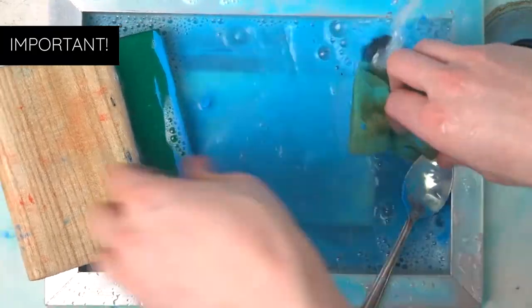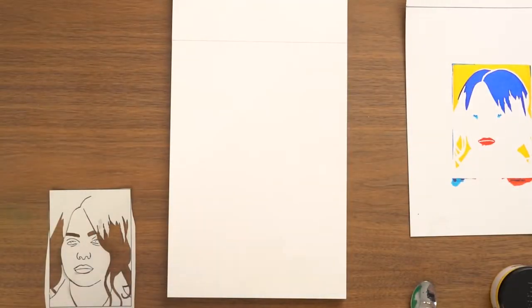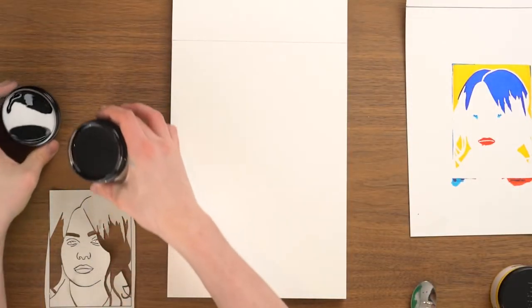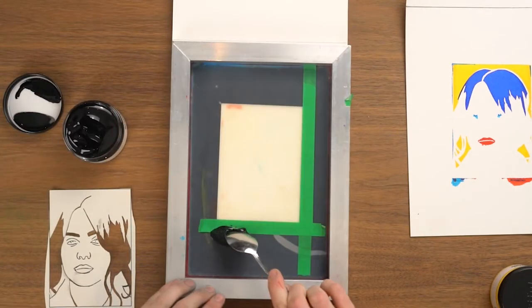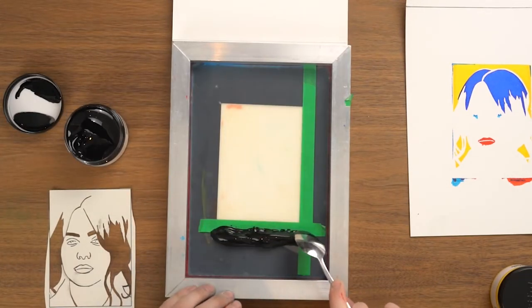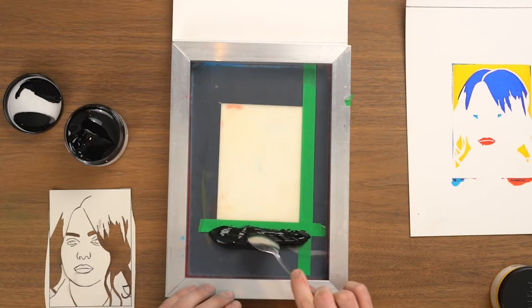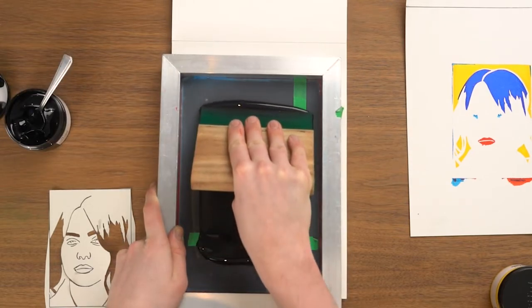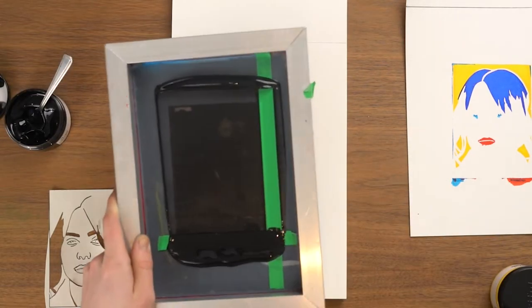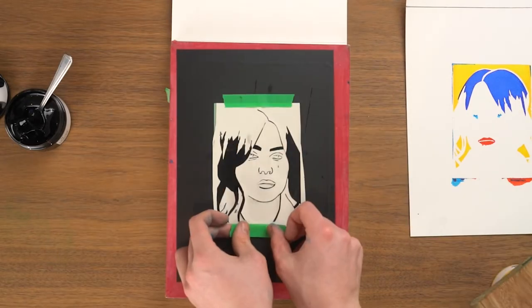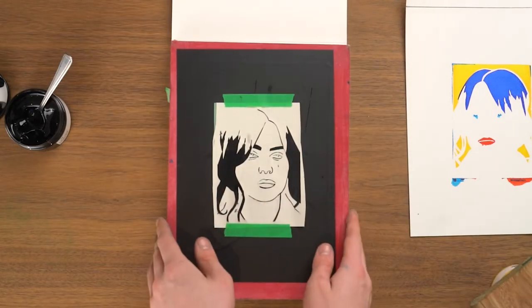Which is by far the fiddliest paper stencil that I've made. So one last time for luck, use your spoon to apply a generous amount of paint. Flood the screen without the screen touching the surface. Flip your screen over and line up our fiddly final layer with our printing area.